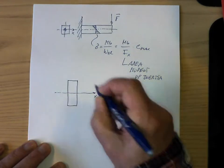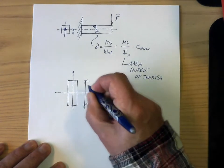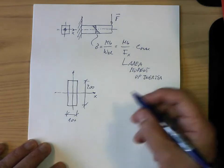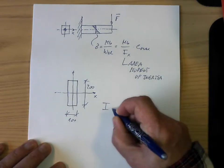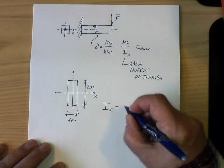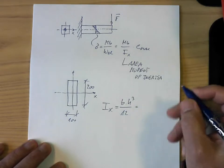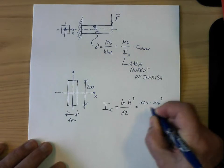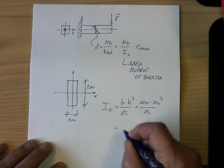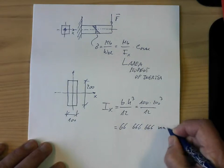Here is the x-axis of interest, that can be y. Let's say this dimension is 200 and this one is 100 as an example. If I want to know the area moment of inertia about this x-axis, I_x is the width times the height cubed divided by 12 — b times h³ divided by 12. That gives us 100 times 200³ divided by 12, and if I calculate it I get 66,666,667 mm⁴, assuming the unit is millimeters.